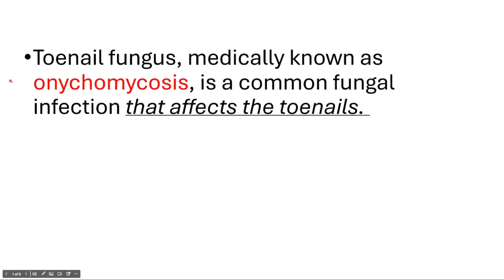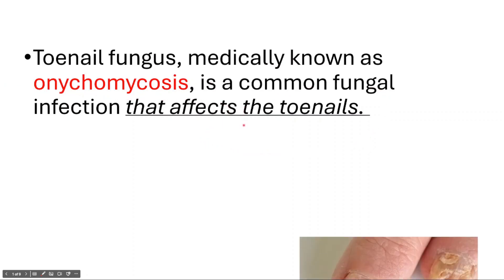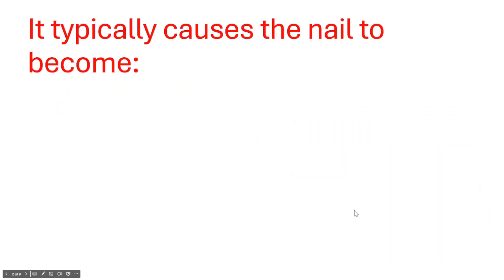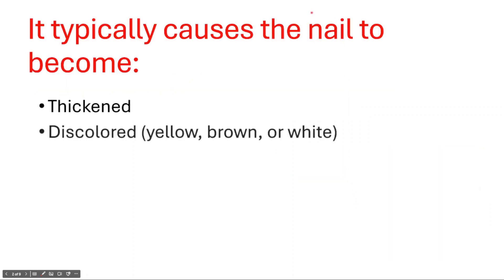Onychomycosis is a common fungal infection that affects the toenails. Here you can see an example. It typically causes the nail to become discolored — yellow, brown, or white.